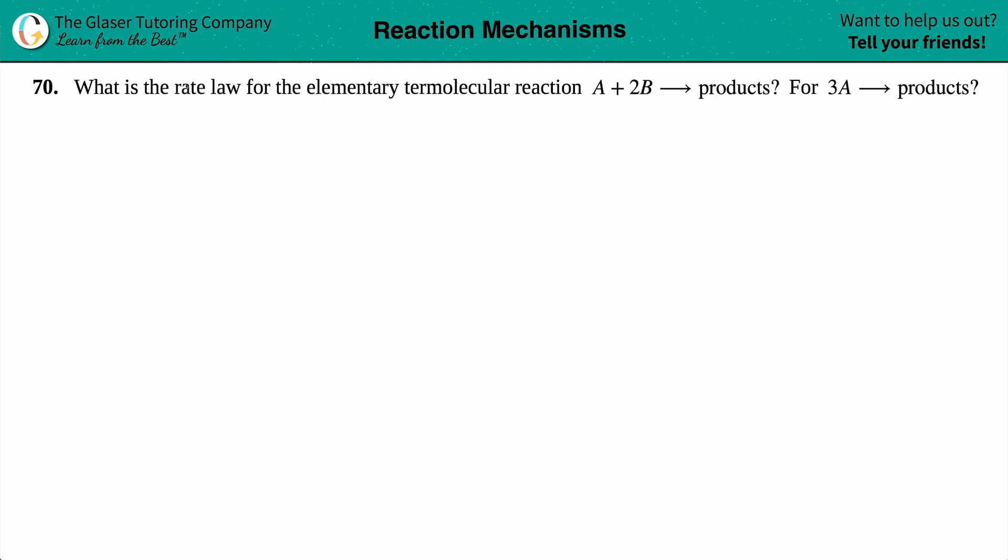Number 70, what is the rate law for the elementary termolecular reaction A plus 2B yields products, and then 3A yields products?